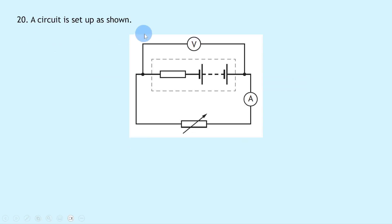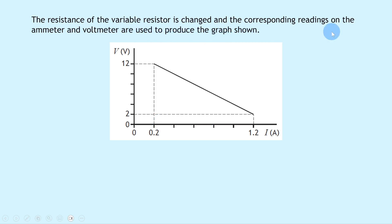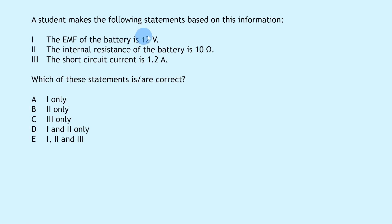Question 20 shows a circuit with a battery with internal resistance, a voltmeter in parallel, an ammeter and a variable resistor. A graph of terminal potential difference against current is plotted. Three statements are made: Statement 1 — the EMF is 12 V; Statement 2 — the internal resistance is 10 Ω; Statement 3 — the short circuit current is 1.2 A.